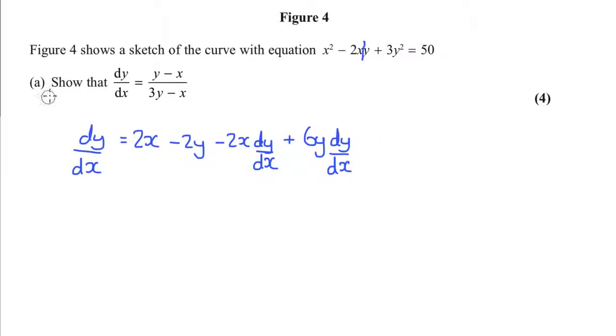Sorry, I've written dy by dx there, that's terrible. I shouldn't have done that. You don't do that for implicit differentiation. This equals 0, because when you differentiate 50 with respect to x, you get 0.